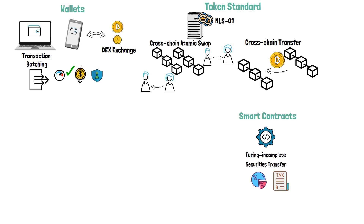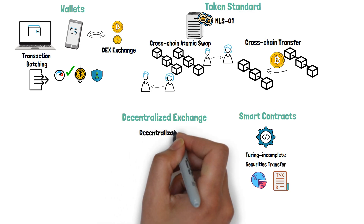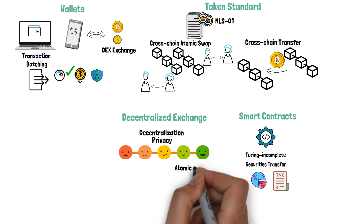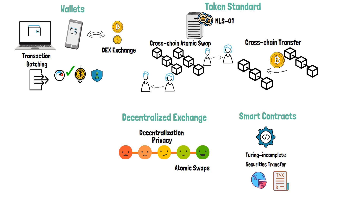Another component of MintLayer is the decentralized exchange, which allows different types of transfers depending on the user's needs in terms of decentralization and privacy. Atomic swaps do not rely on any particular communication system and cannot be distinguished from any other blockchain transaction. Multiple atomic swaps split a single order into multiple sub-orders, increasing the possibility to find a match in terms of amount and price for the pair requested. Multiple atomic swaps also introduce a peer-to-peer communication system that allows swaps between unknown parties with no prior contact. The orders broadcasted are stored by the nodes in a decentralized manner using a distributed hash table. As these distributed hash tables can become quite large and might overload small devices, observer and book aggregator enabled swaps introduce some degree of centralization for the benefit of higher efficiency.